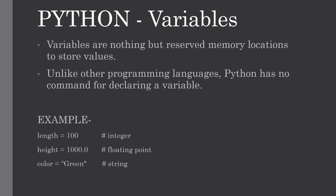Python variables do not need explicit declaration to reserve memory — the declaration happens automatically when we assign a value. The equal sign is used to assign values to variables. The operand to the left of the equal-to operator is the variable name, and the operand to the right is the value stored in the variable.